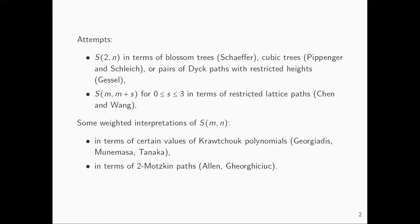We also have some weighted interpretations of the super-Catalan numbers. For example, we can think of s(m,n) as certain values of a polynomial called the Kravchuk polynomial — this is work by Georgi, Odis, Munemasa, and Tanaka. Or we can also think of s(m,n) in terms of two-mod-skin paths, research conducted by Alan and Georgi Odis.